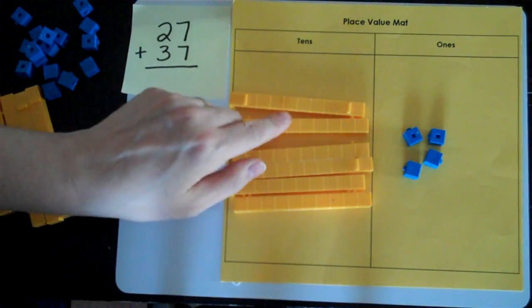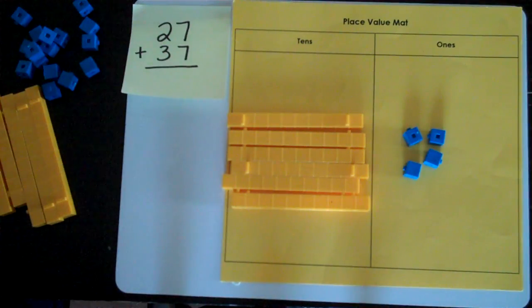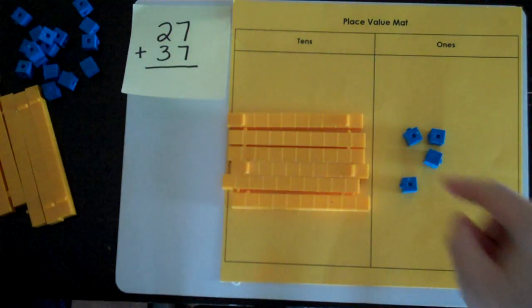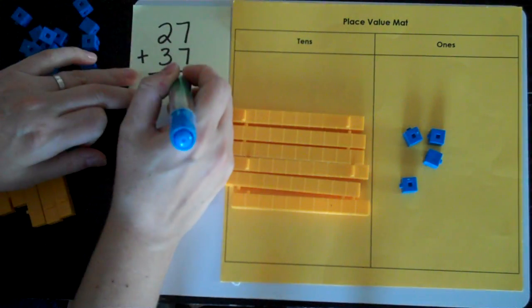Now I have between zero and nine. Let's check the tens place. One, two, three, four, five, six. Six is between zero and nine. So now I can put my answer down. I have four ones. I'm going to put that in the ones place.